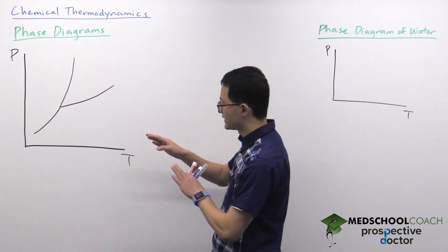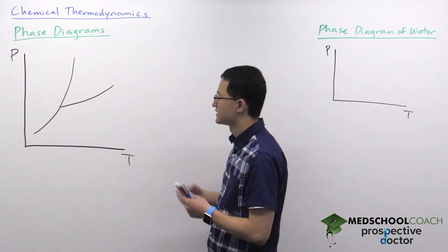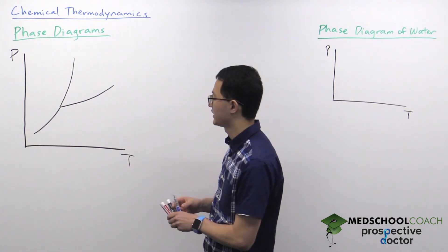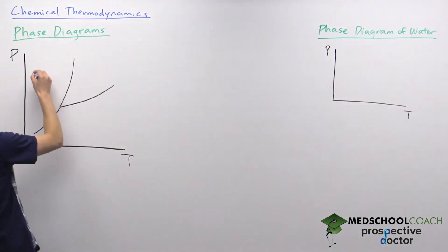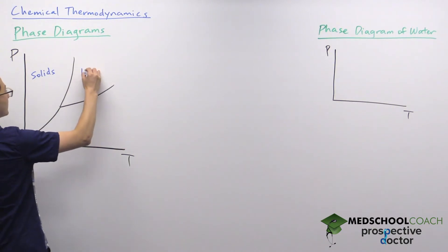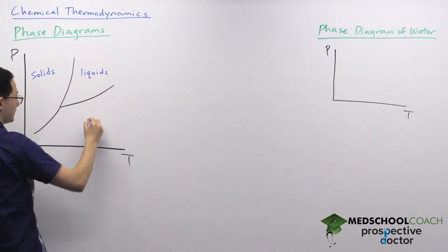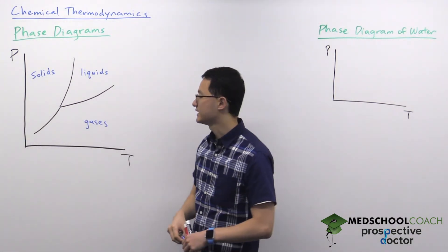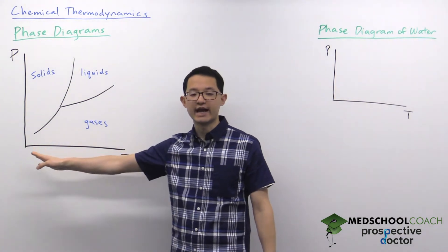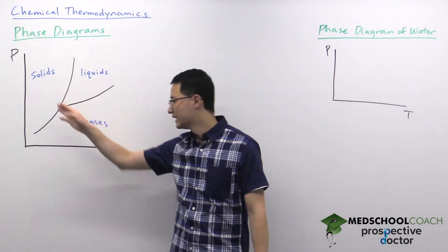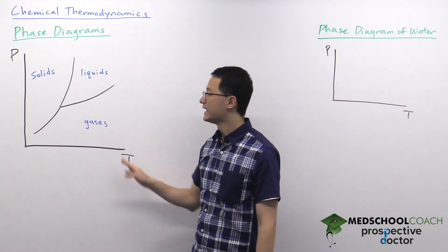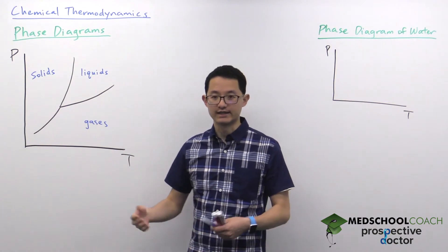In general, the graph is divided into different regions, and these different regions have different phases. On the left is where we have solids. In another region we have liquids, and in another region we have gases. The pressure and temperature combinations make sense: solids are generally at lower temperatures and higher pressures, gases at high temperatures and low pressures, and liquids are somewhere in between.